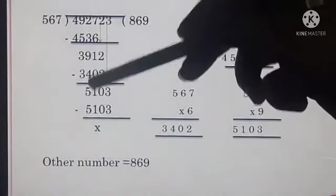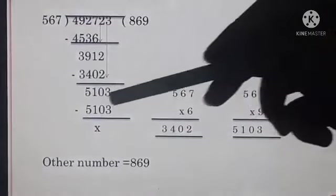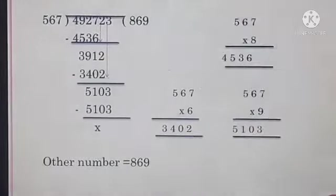We find that 567 sixes is 3,402 which will be written here. And then 2 minus 2, 0. 1 minus 0, 1. 9 minus 4, 5. 3 minus 3, 0. So 510. And now 3 will be taken, it is 5,103.